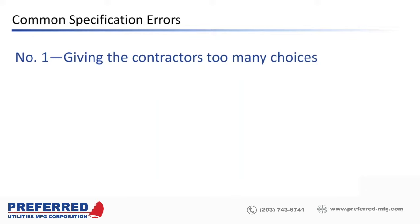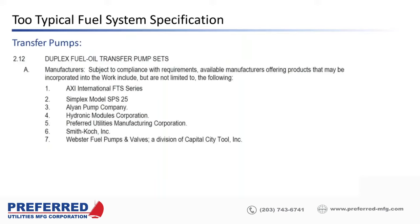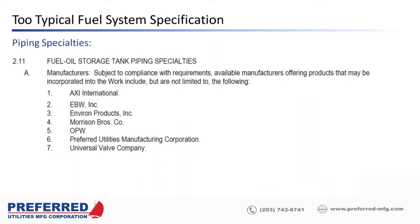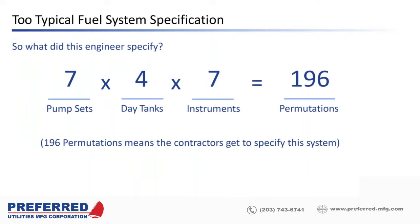Common specification error number one: the number one mistake we see design engineers make is giving contractors and suppliers too many choices. In one real-life example, the engineer gave suppliers and contractors a choice of seven duplex transfer pump sets, four day tanks, and seven tank piping specialties. Adding those together gives 196 permutations — so in this case it's the contractor who's really specifying the system, not the engineer. The owner and engineer have no idea what they're getting.